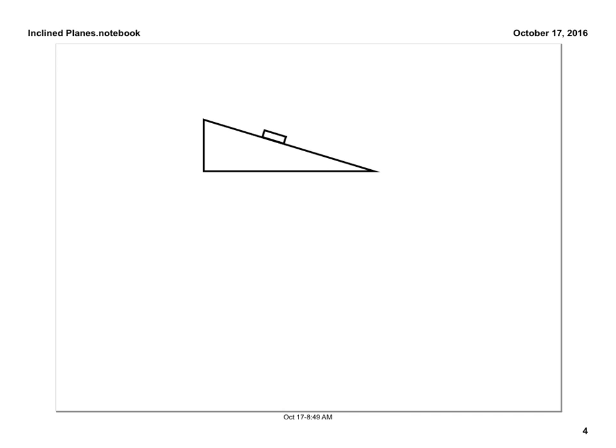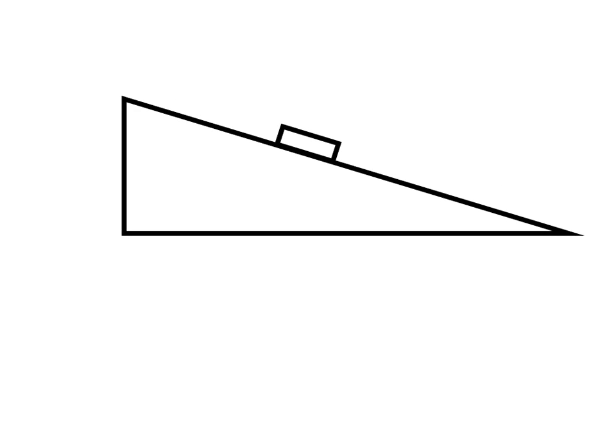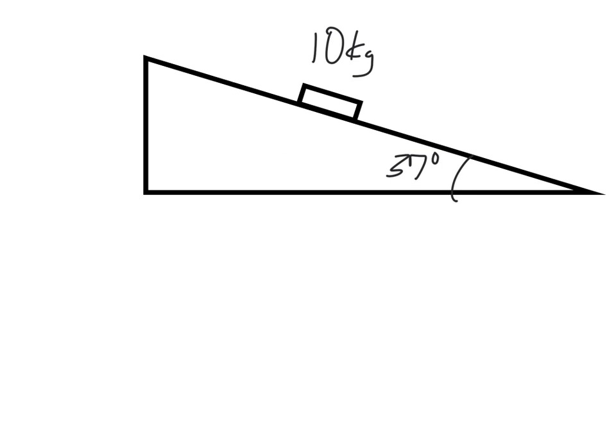Let's do one more problem just to sort of tie it all together. Let's have a ramp that is 37 degrees. And let us have a block that is 10 kilograms. Nice and easy. And I want to know what my normal force is. I want to know what the normal force is. And I also want to know what my acceleration is. So I'm going to do the normal force first. And really first, I'm going to draw a free body diagram.